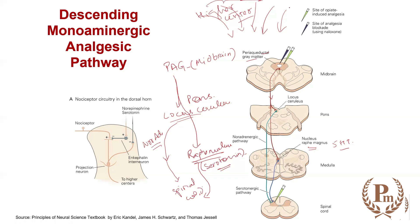To summarize: a lot of emotions from the higher centers stimulate the periaqueductal gray area, which in turn stimulates two nuclei — the locus coeruleus in the pons (noradrenergic pathway) and the nucleus raphae in the medulla (serotonergic pathway). These serotonergic and noradrenergic fibers descend and converge onto the spinal cord.